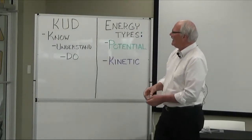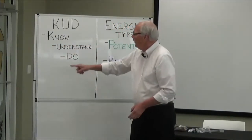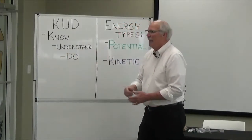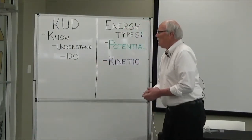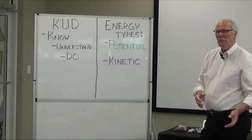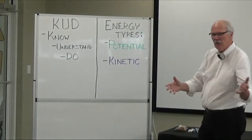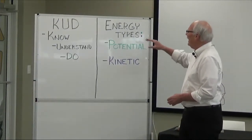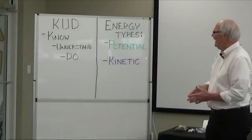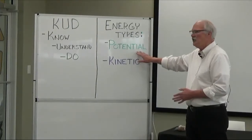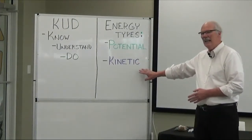The KUD process is: what do we already know? What do we understand? And what can we do with that information? Well, as you probably are aware, some of you already have some background in energy types. You're familiar with energy being one type — potential energy — and another type — kinetic energy.